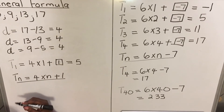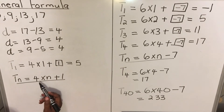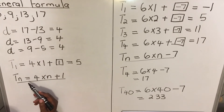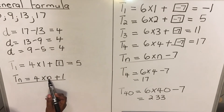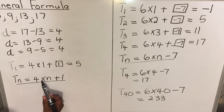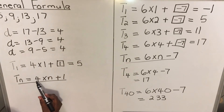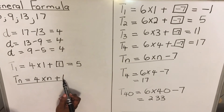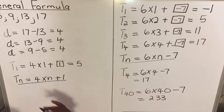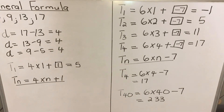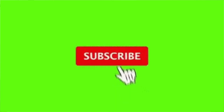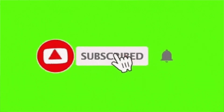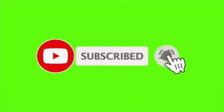This is your general formula. In words: take the term number n, multiply by 4, and add 1 — then you find any term in the sequence. Thank you for watching; this is the end of the lesson.